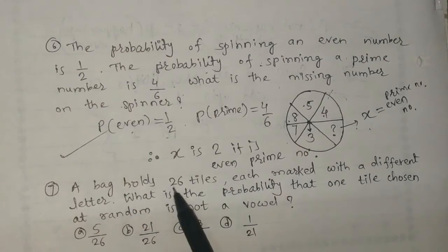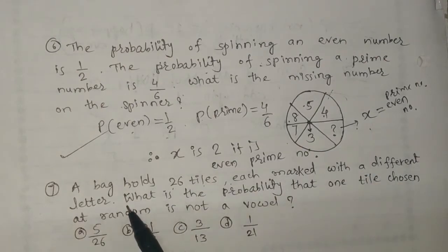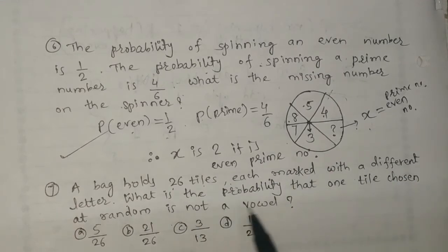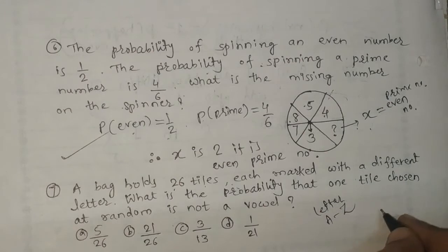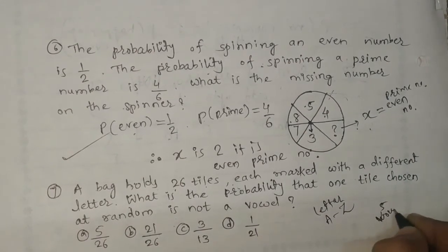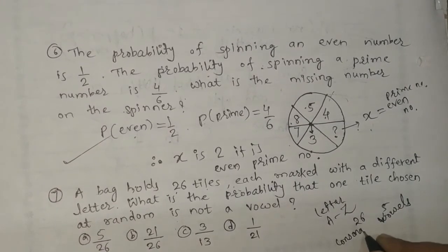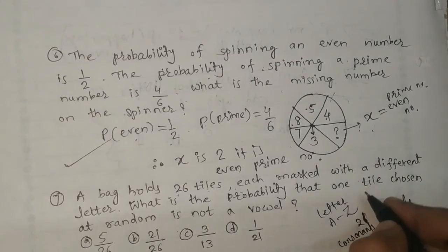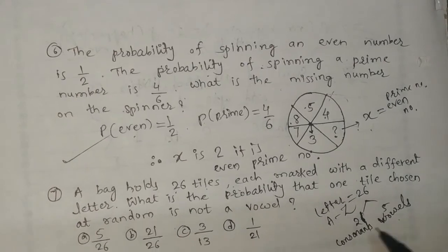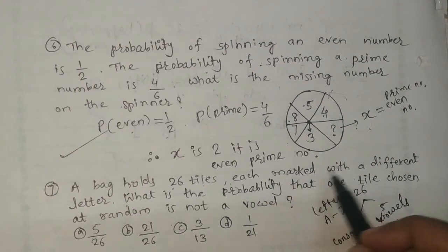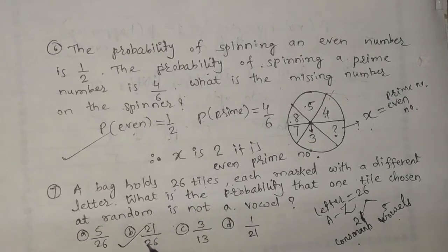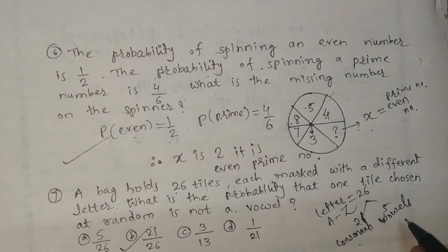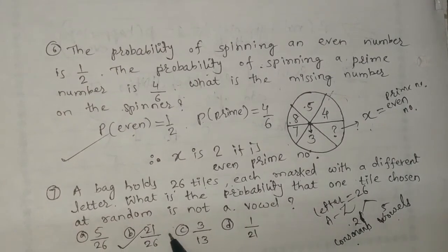The next question: a bag holds 26 tiles, each marked with a different letter. What is the probability that one tile chosen at random is not a vowel? In the letters A to Z, we have 5 vowels and 21 consonants, totaling 26 letters. So the probability that the tile is not a vowel is 21 out of 26, because there are 21 consonants out of 26 total possible outcomes.